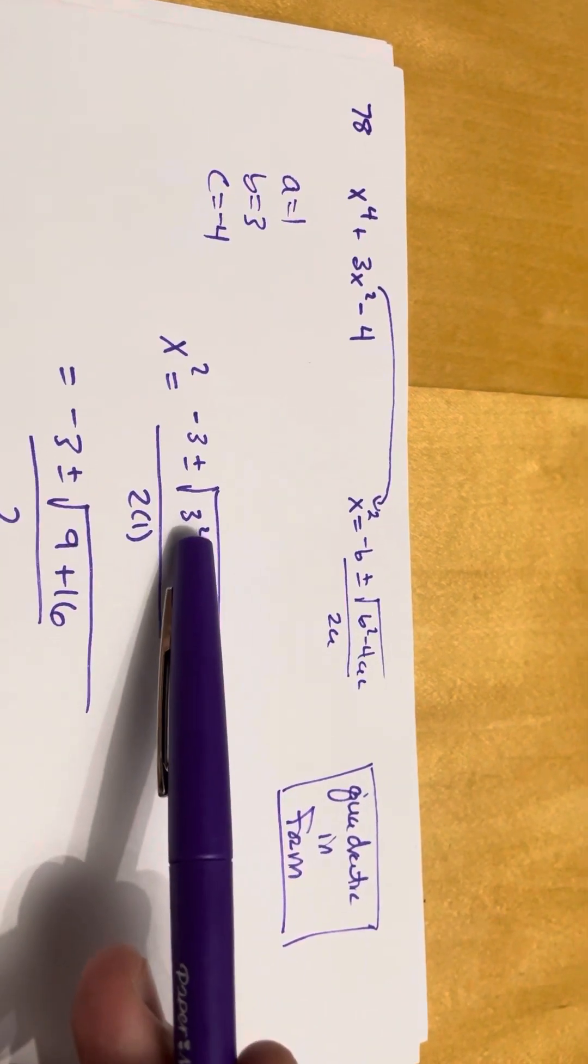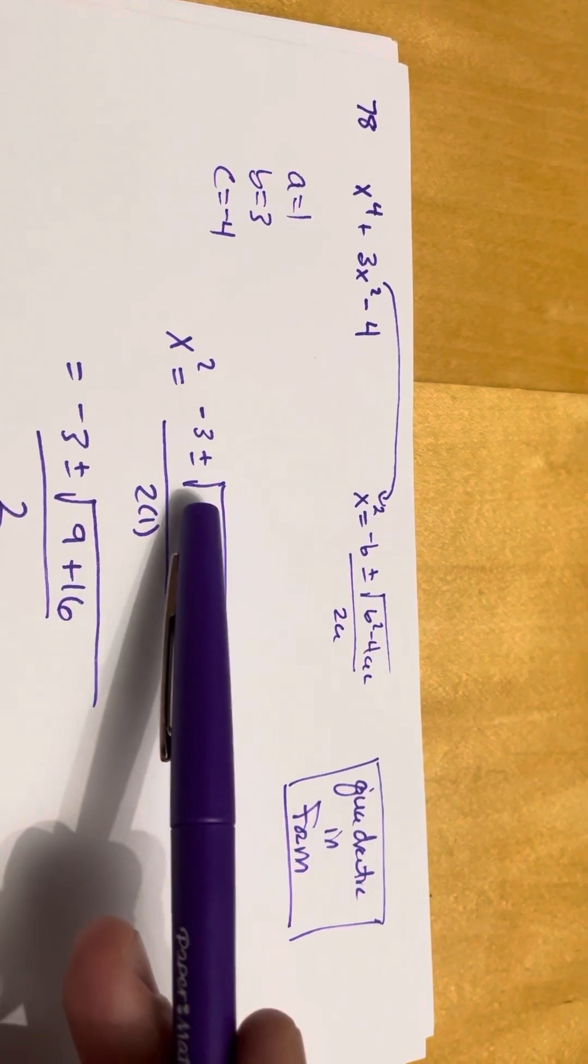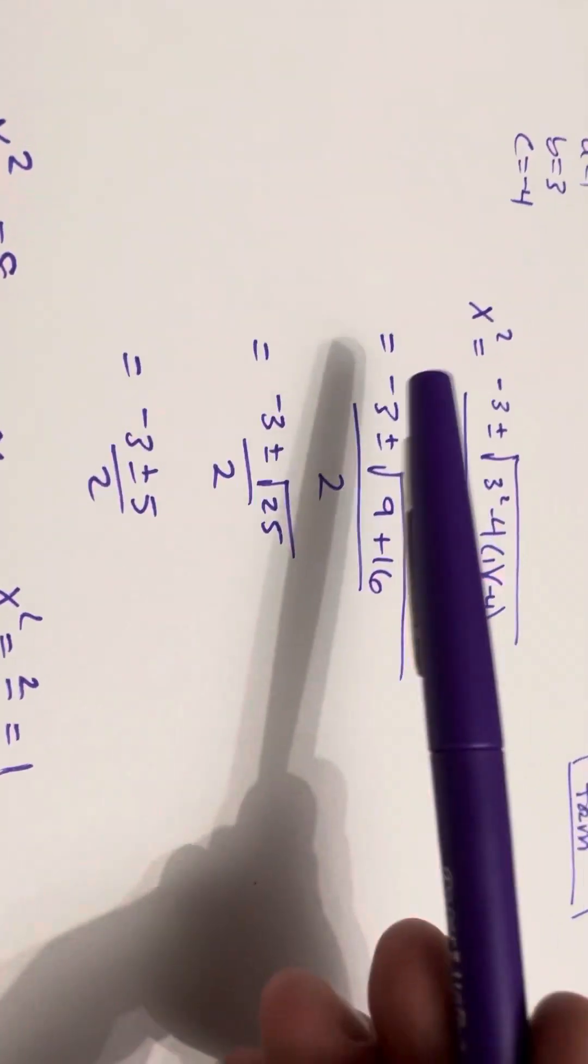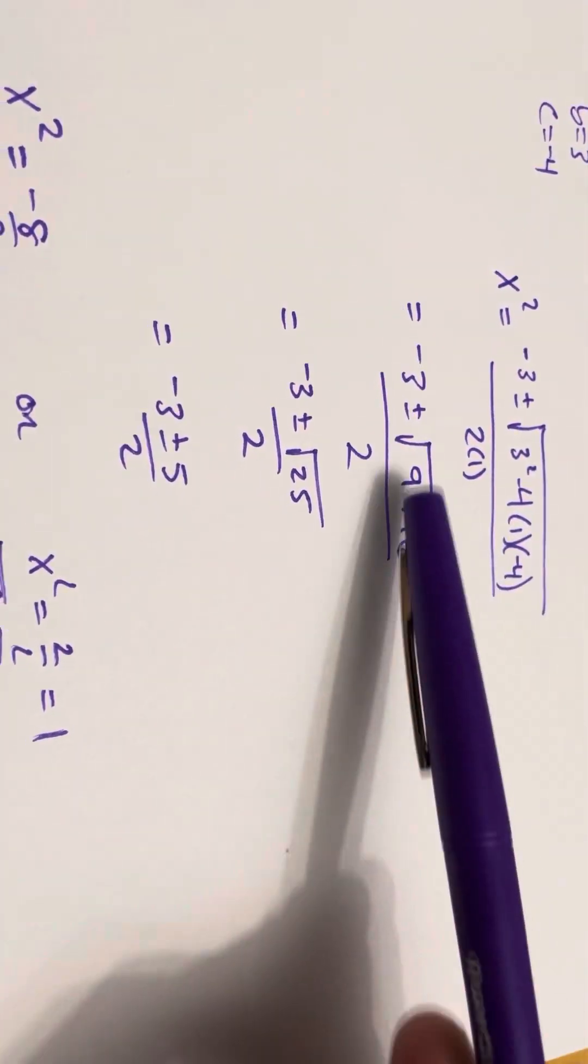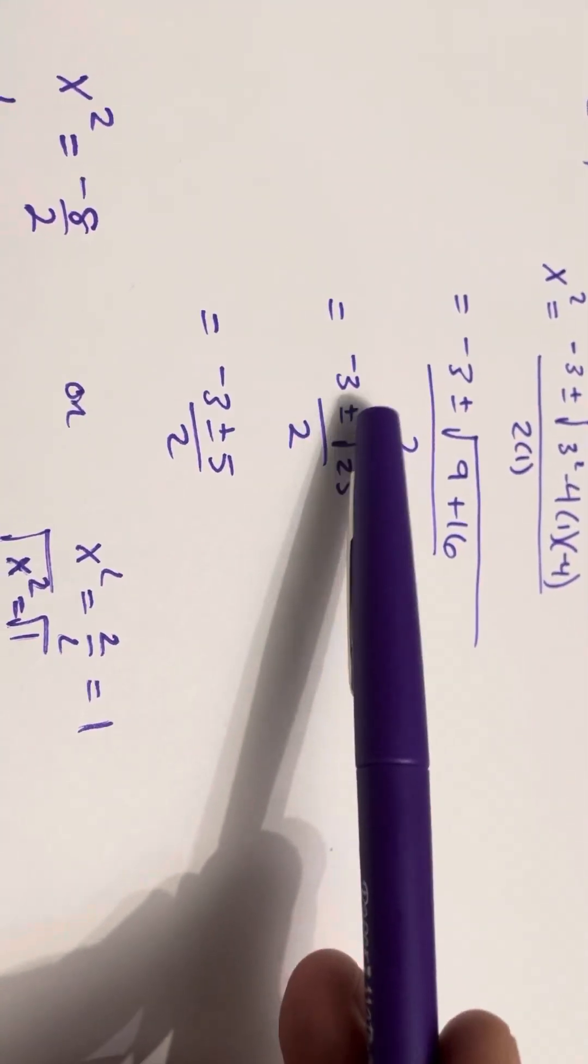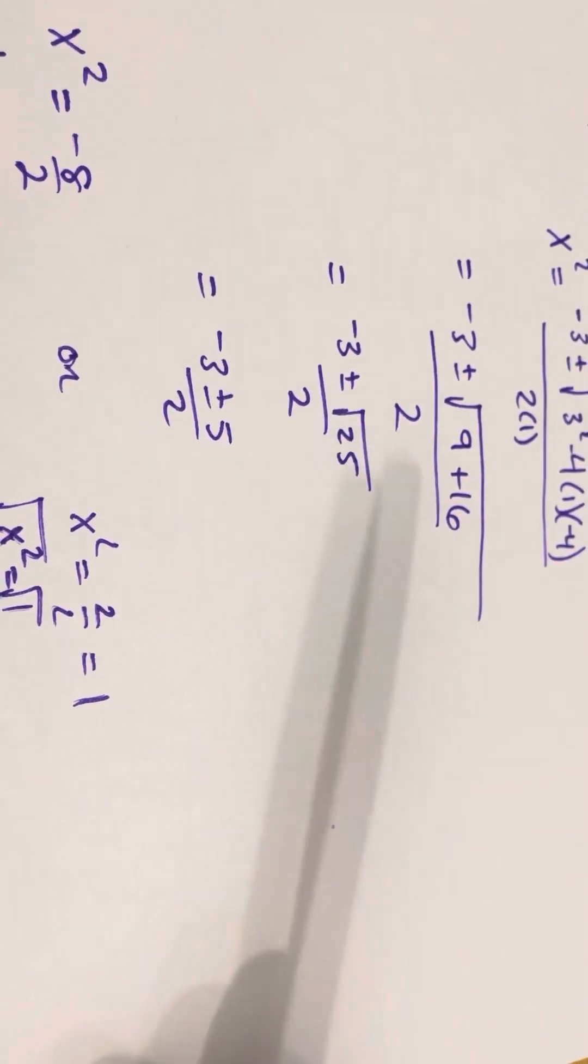Now, a negative 4 times 1 times negative 4 is a positive 16. 3 squared is 9. So, we're looking at x squared being equal to that expression, which is equal to this expression, which is equal to negative 3 plus or minus the square root of 25 over 2. And the square root of 25 is 5.